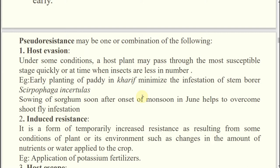When the insect is in the larval stage and the plant is in the early vegetative stage or seedling stage - which is more susceptible - the damage will be more. That means those are the susceptible stages. If the insect is in the actively feeding larval stage and the plant is in the susceptible stage, maximum pest infestation may be there in the field.